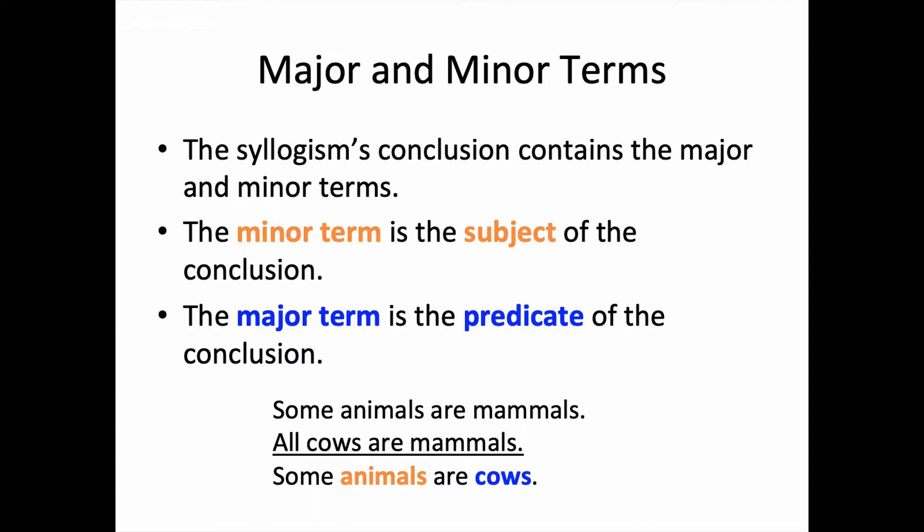So in this argument, we have some animals are mammals, all cows are mammals, so some animals are cows.